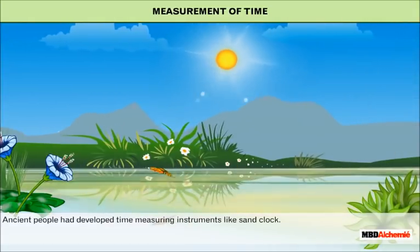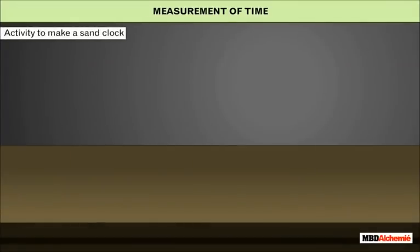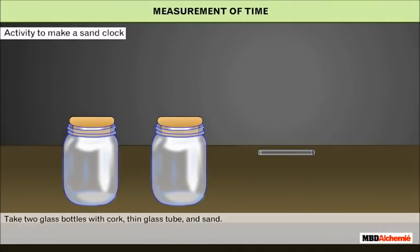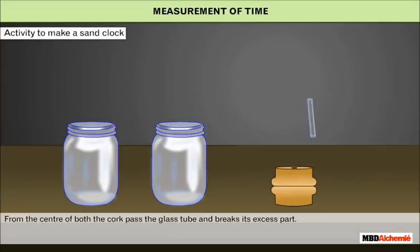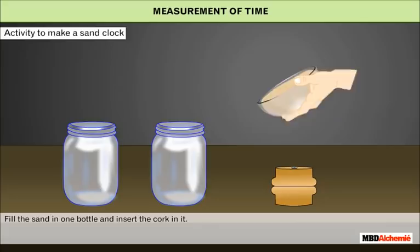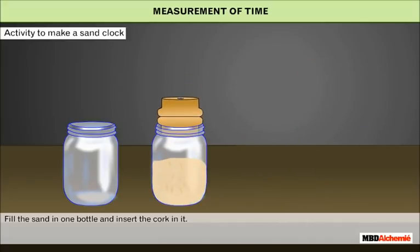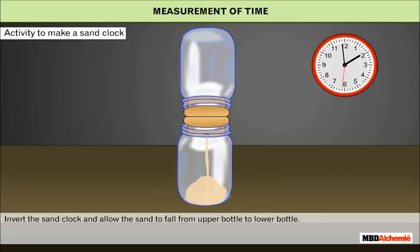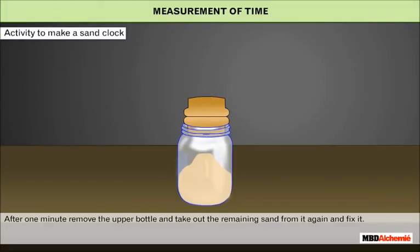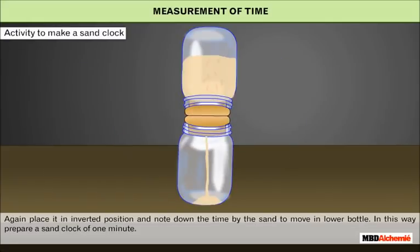Ancient people developed time-measuring instruments like the sand clock. To make a sand clock, take two glass bottles with cork and a thin glass tube. Stick them together, pass the glass tube through the center of both corks, fill one bottle with sand, and fix the empty bottle on top in an inverted position. Allow the sand to fall from the upper bottle to the lower bottle. After one minute, note the sand level and prepare a one-minute sand clock.